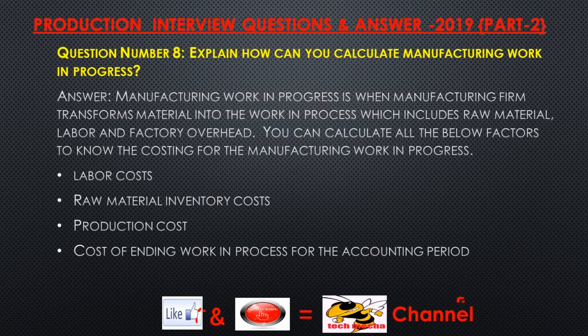Question number eight: Explain how can you calculate manufacturing work in progress. Answer. Manufacturing work in progress is when a manufacturing firm transforms materials into work in process, which includes raw material, labor, and factory overhead. You can calculate the following factors to know the costing: labor costs, raw material inventory costs, production cost, and cost of ending work in process for the accounting period.